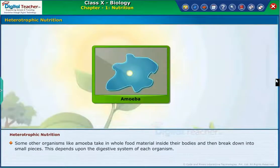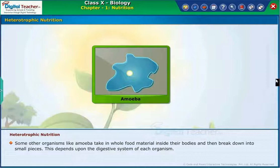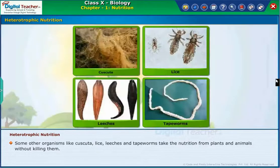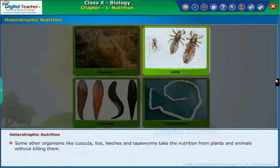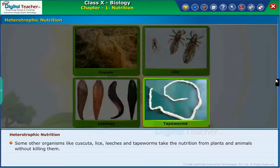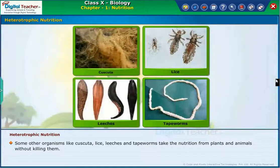Some other organisms, like amoeba, take in whole food material inside their bodies and then break it down into small pieces. This depends upon the digestive system of each organism. Some other organisms like lice, leeches, and tapeworms take nutrition from plants and animals without killing them. Let us learn how organisms obtain their nutrition.